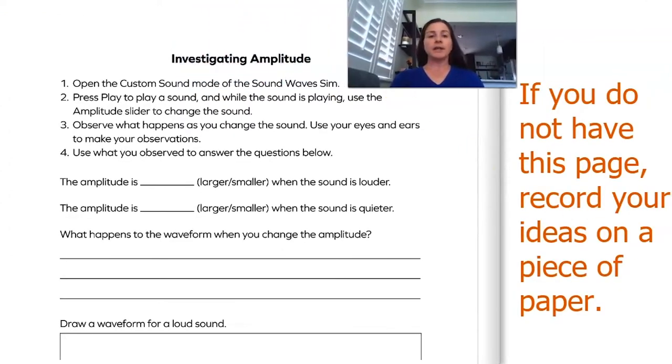So we're going to go to the sim and we're going to open the custom sound mode. We're going to press play to play a sound. And while the sound is playing, we're going to use the amplitude slider to change the sound. I wonder what that's going to change about it. We're going to observe what happens as we change the sound and we're going to use our eyes and ears to make our observations. And then we're going to use what we observe to answer these questions.